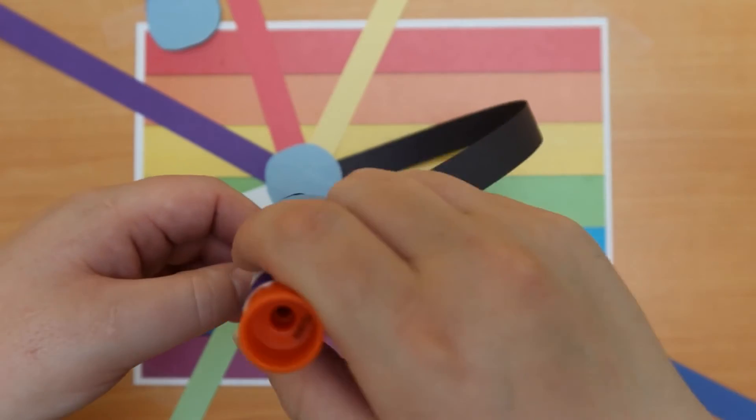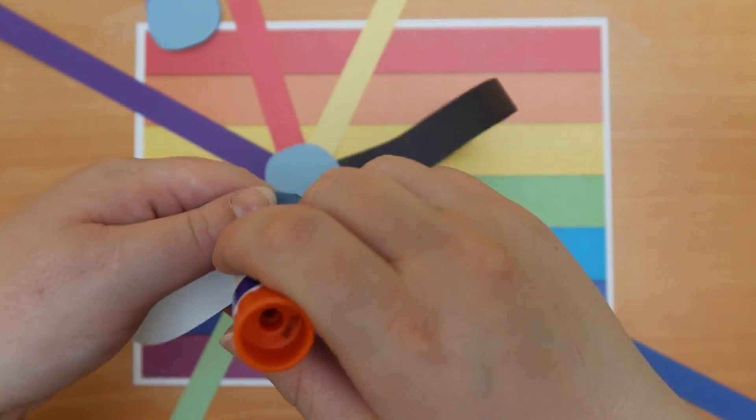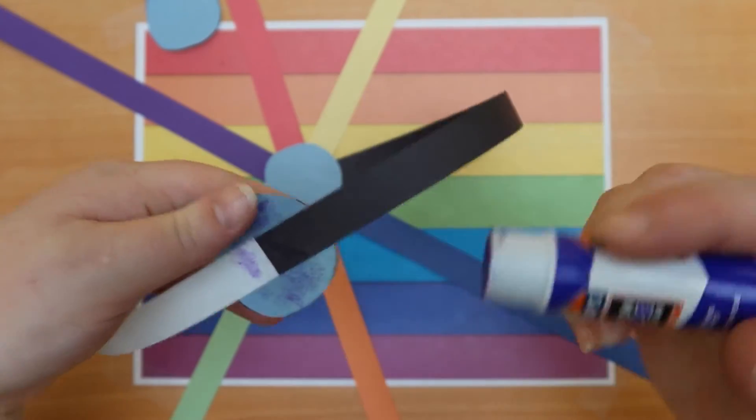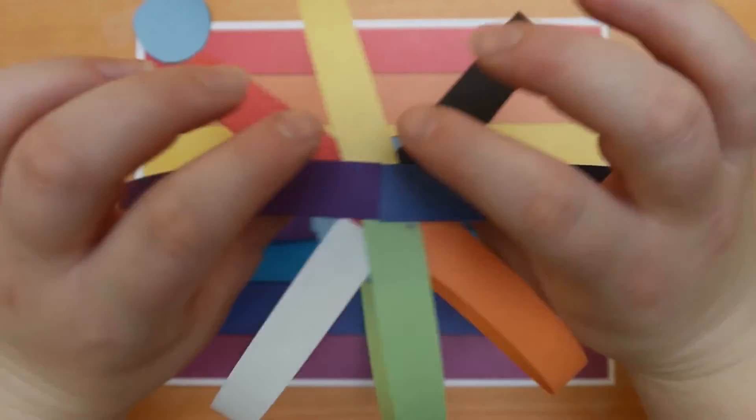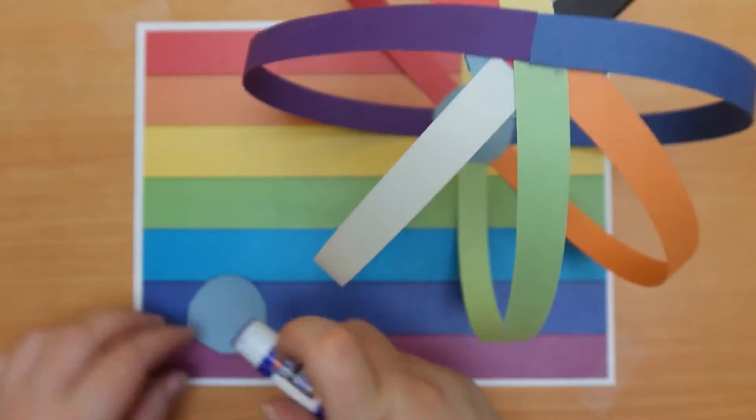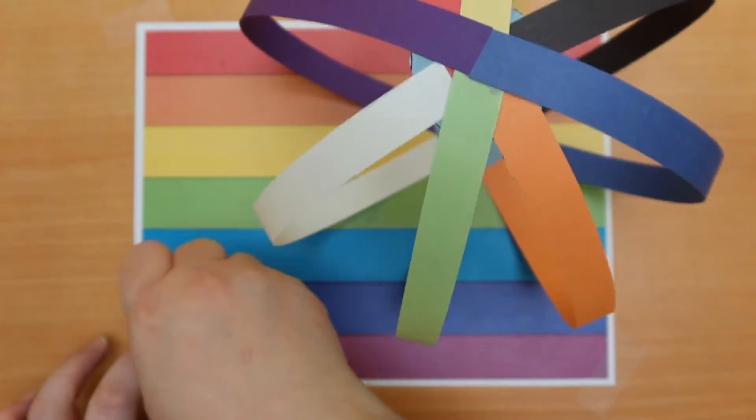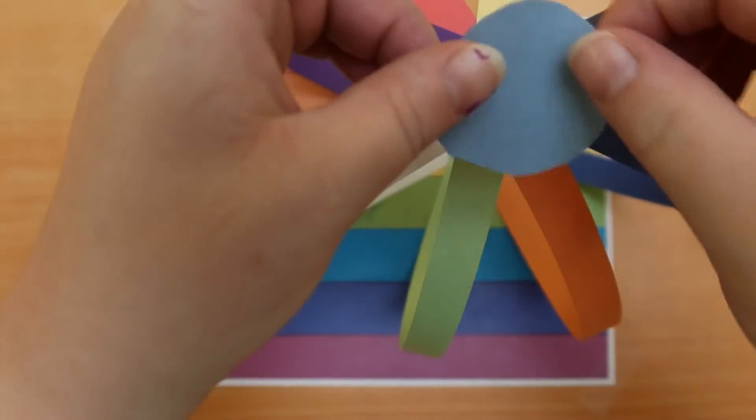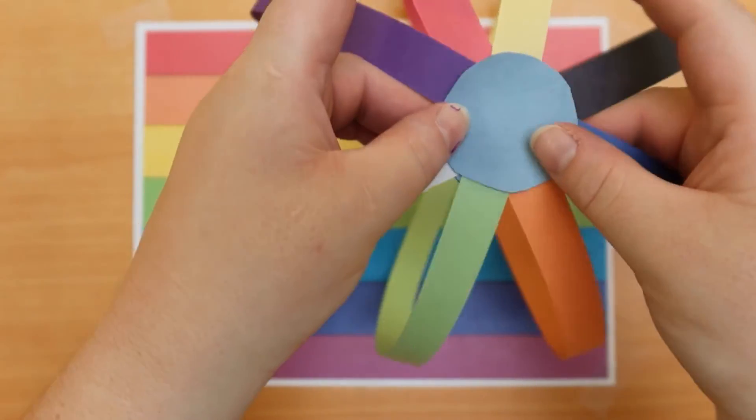You will also need to continue adding glue as needed. You will then take your last circle and glue it and add it on top to secure all the papers together.